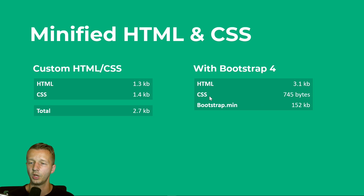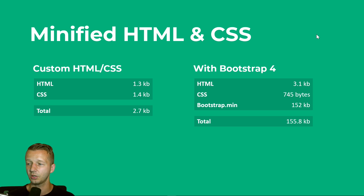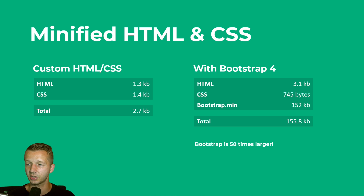Continuing on, the custom CSS is smaller. When working on a Bootstrap project, you'll still want to make unique adjustments in your own CSS file, and I only needed about half the amount of CSS compared to the 1.4 KB custom version. Then Bootstrap.min, which I included from a CDN, totals at 152 kilobytes, giving a combined total of 155 kilobytes — meaning this production-ready Bootstrap version would be 58 times larger than the custom HTML/CSS at 2.7 kilobytes.